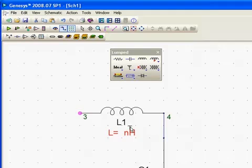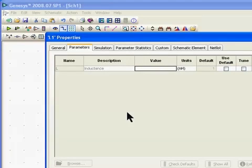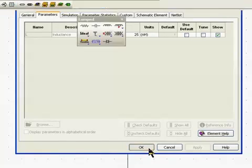Now what we want to do is double click on the parts and that opens up the part properties. This is an ideal inductor. I'm going to make it 25 nanohenries and say OK.